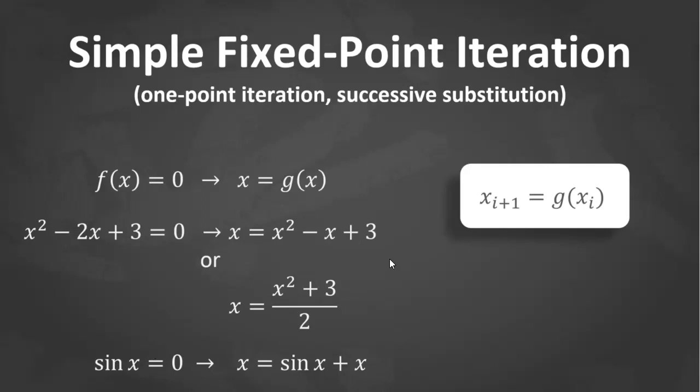Given an initial guess at the root xi, the iterative formula can be used to compute a new estimate xi+1. As with other iterative formulas, the approximate error for this equation can be determined using this equation: current minus previous over current.